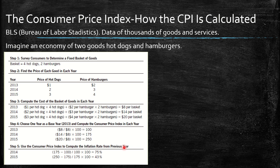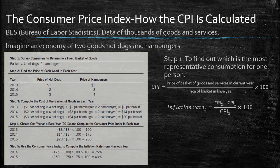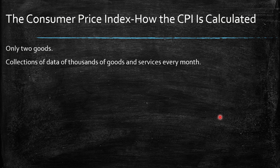Step five: use the CPI to compute the inflation rate, which is the percentage change — (final value minus initial value) over initial value times 100. From 2013 to 2014 we see a 75% increase in the basket. From 2014 to 2015 there is a 43% increase. The CPI formula is always the price of the basket in the current year over the price of the basket in the base year, times 100. The BLS collects thousands of goods and services every month.